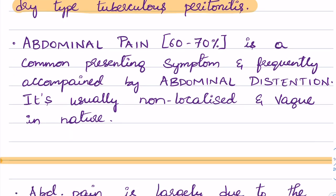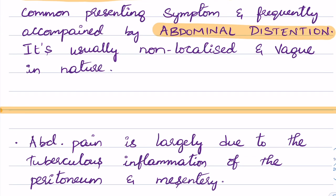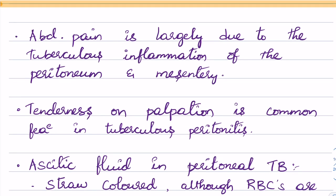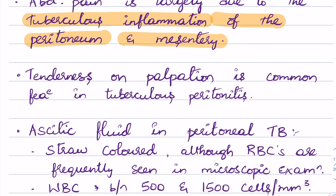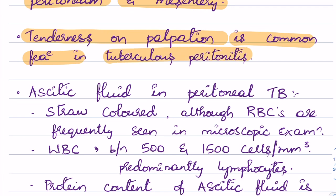The most common presenting complaint in patients with TB peritonitis is abdominal pain, which is seen in 60 to 70 percent of patients, and it is often accompanied by abdominal distension. The abdominal pain is usually non-localized and vague in nature, largely due to tuberculosis inflammation of the peritoneum and the mesentery. On palpation of the abdomen there is tenderness, which is a common feature in tuberculosis peritonitis.